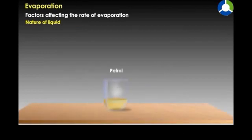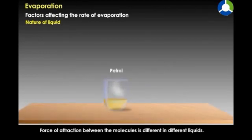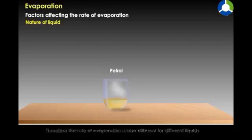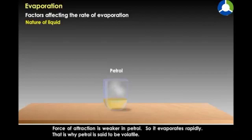Nature of the liquid: Force of attraction between molecules is different in different liquids. Therefore, the rate of evaporation differs for different liquids. Force of attraction is weaker in petrol, so it evaporates rapidly. That is why petrol is said to be volatile.